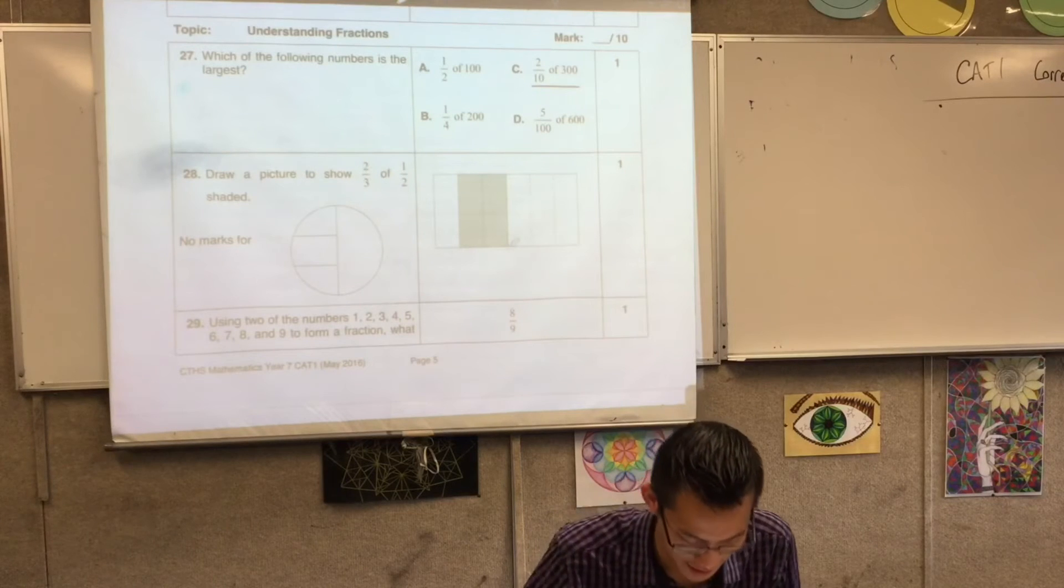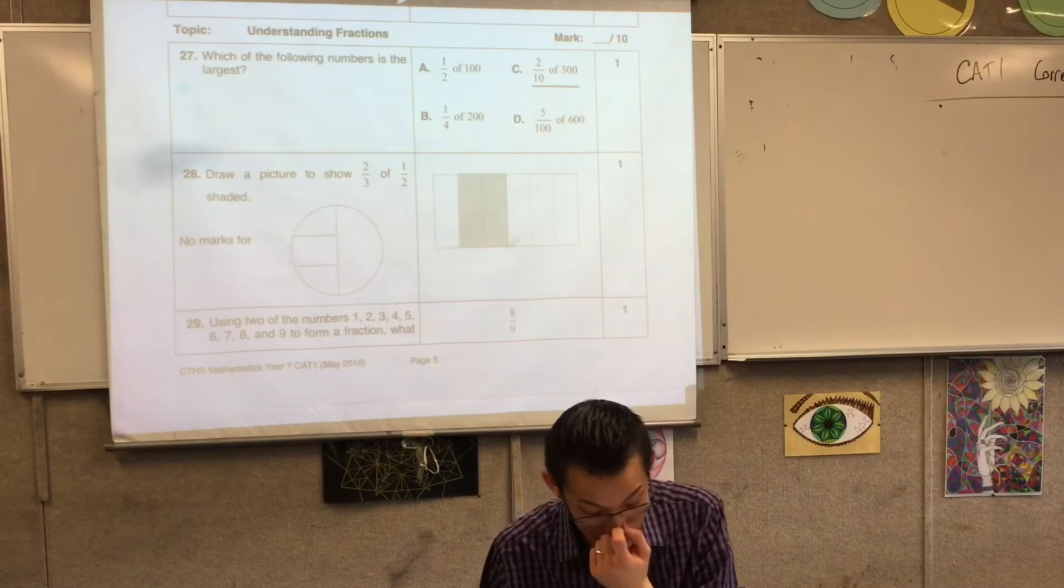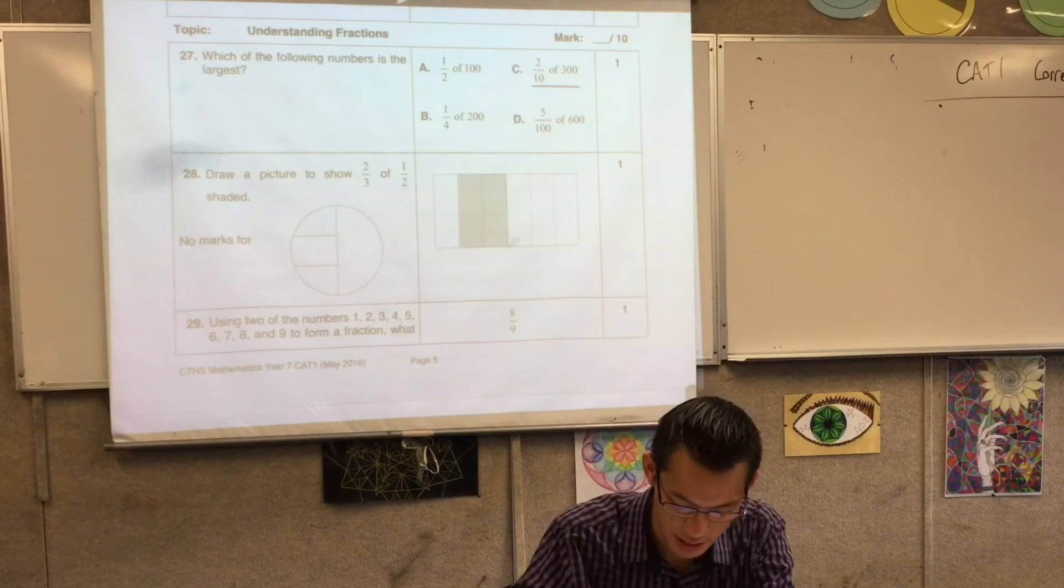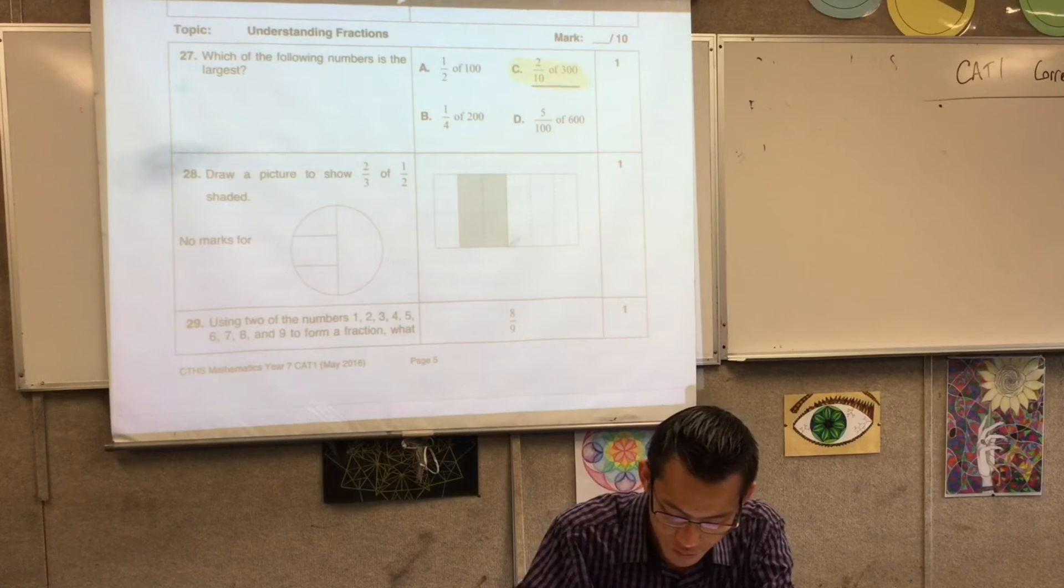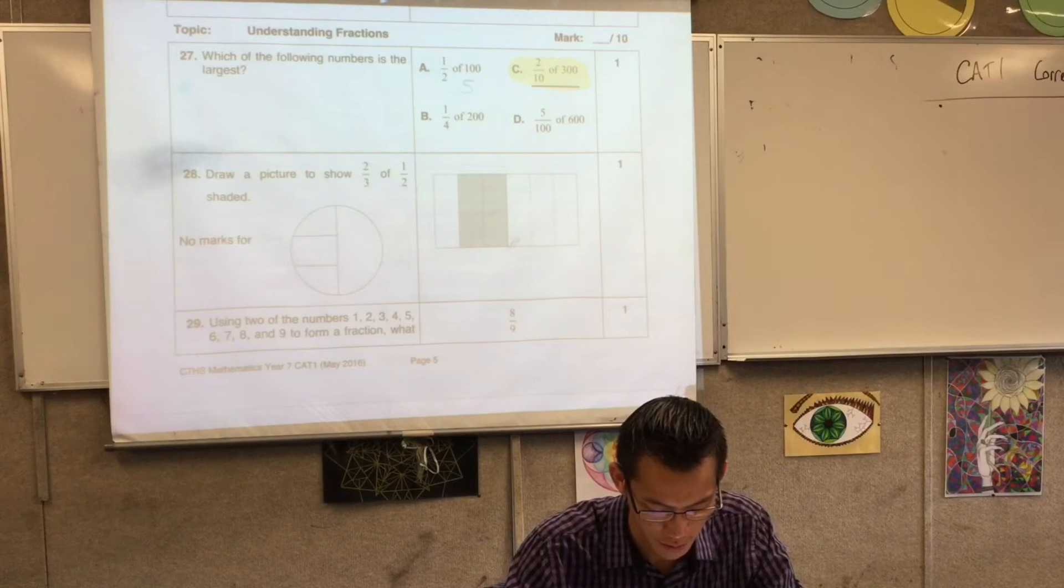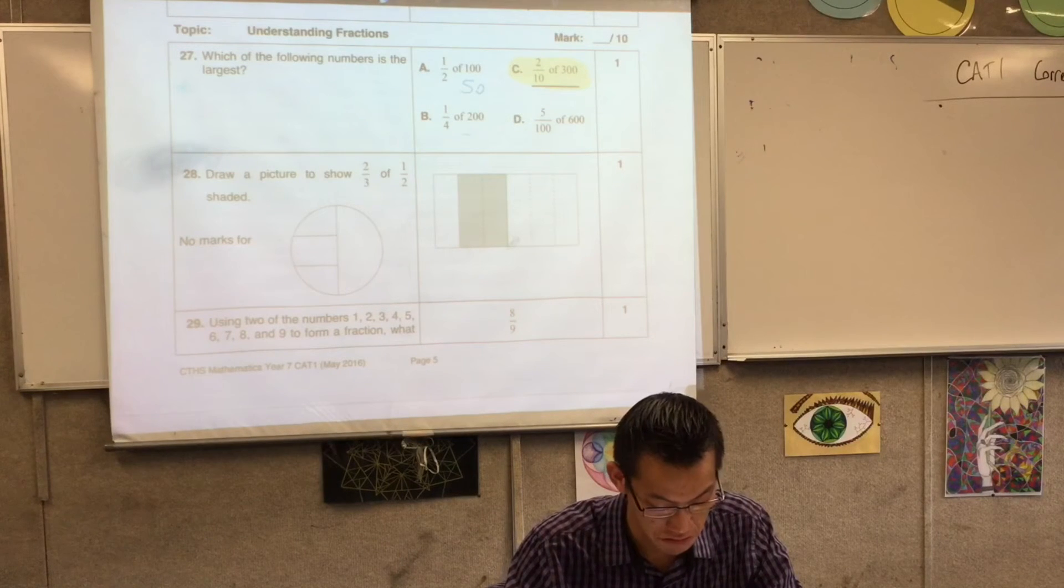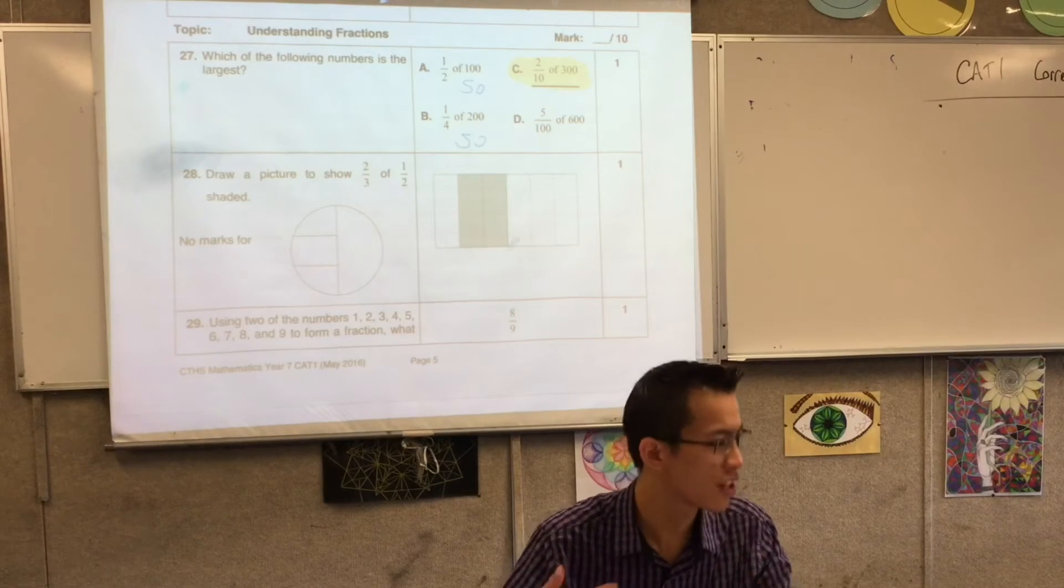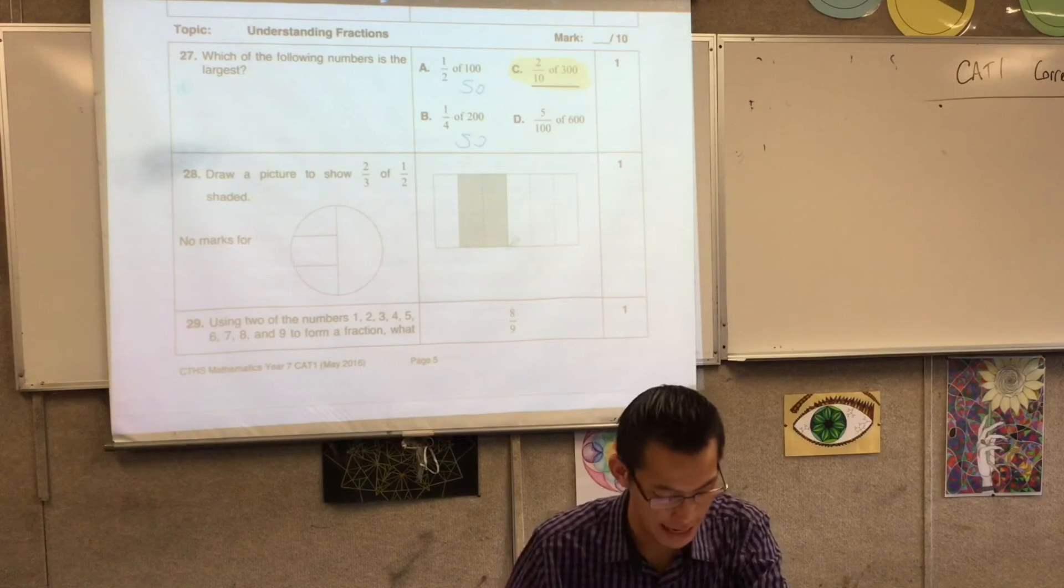Fractions. We're in the tail end. Which of the following numbers is the largest? You can see the answer was C. We're expecting you to maybe just do a multiplication. Half of 100, that's gonna be 50. A quarter of 200, that's also 50. You can go on and on and you'll find out C is the largest one.